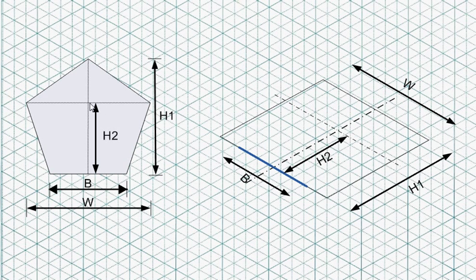And you need to have the h2 to the center of the pentagon here. Once you have these four dimensions, then you can draw the pentagon in the isometric drawing.